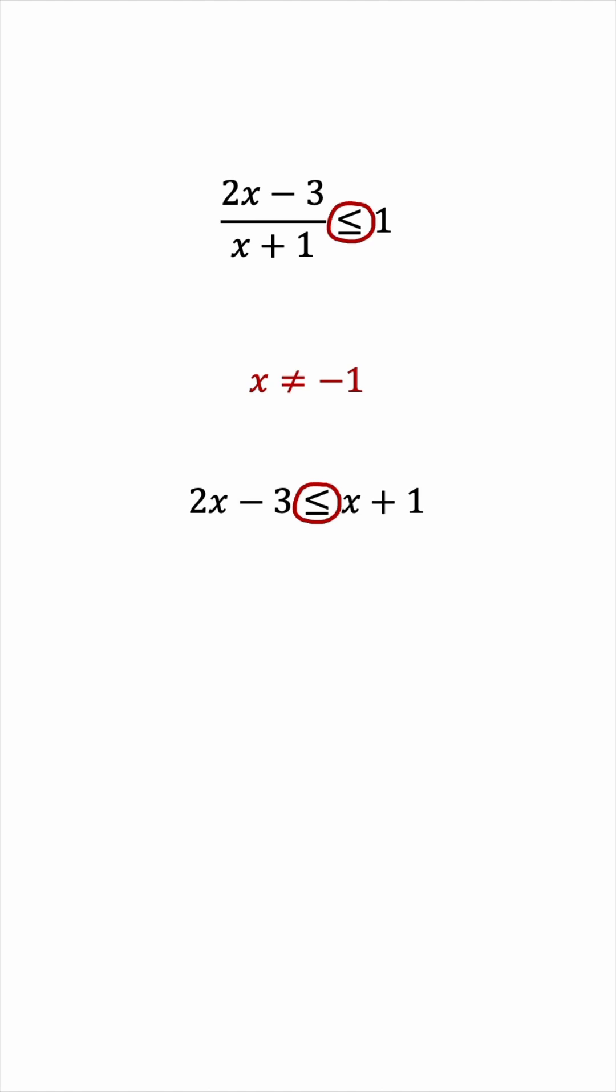When we deal with inequalities, there are occasions where we do flip the inequality sign, and that's, for example, when we multiply both sides by a negative quantity. We did not flip the inequality sign here, so we're actually assuming implicitly that x plus 1 is a positive quantity.